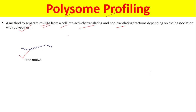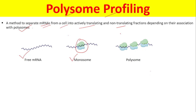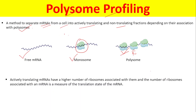We have free mRNA, meaning the mRNA is not associated with ribosomes. Then we have mRNA associated with one ribosome, which is called a monosome. When an mRNA molecule is associated with two or more ribosomes, that is called a polysome.